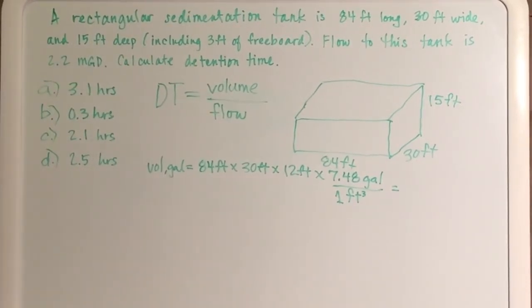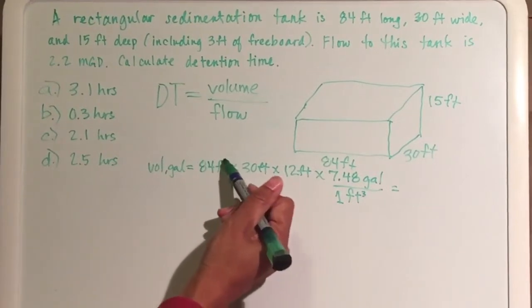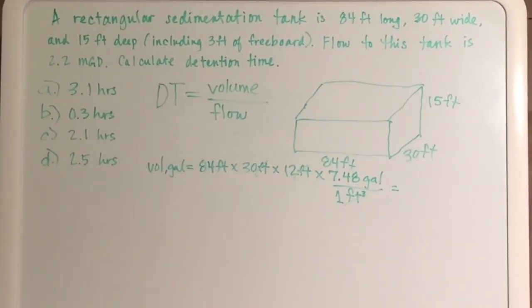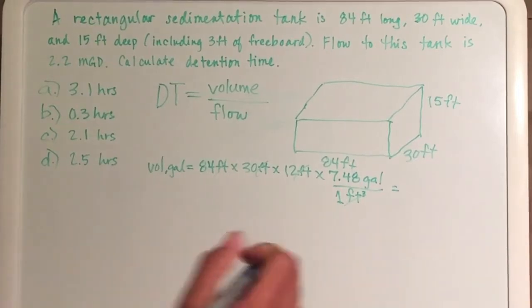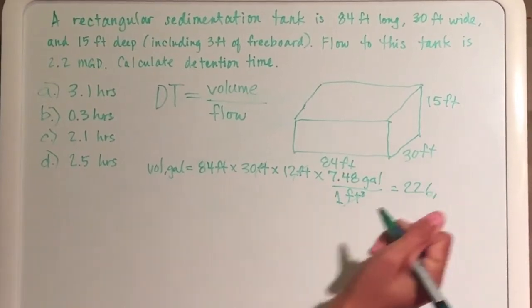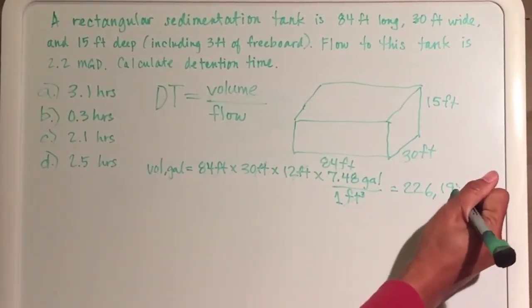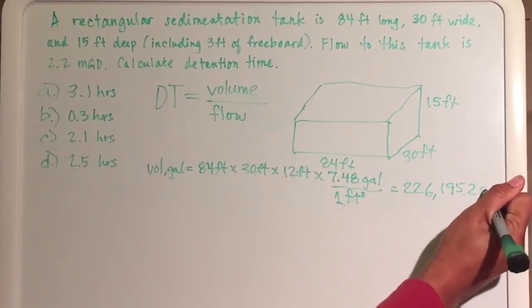You're going to cancel out your cubic feet - there's cubic feet right there and cubic feet there - and you're left with gallons. What is my number for gallons? 226,195.2 gallons.